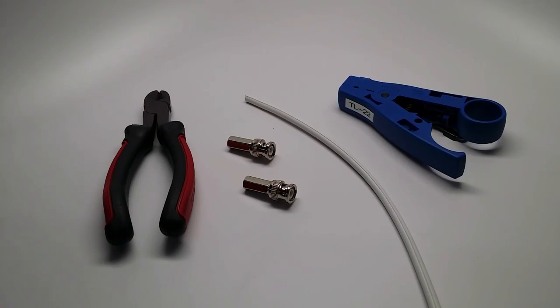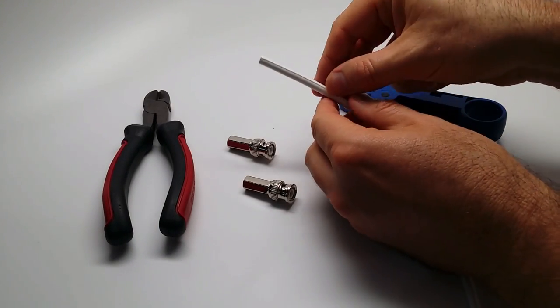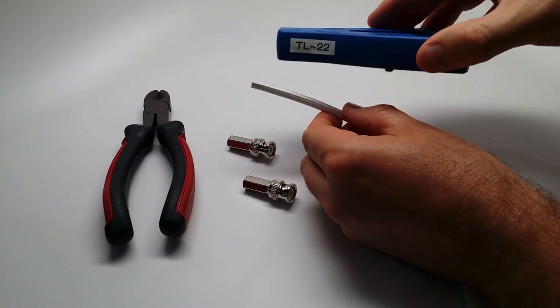Here's the piece of RG59 coax cable that I'm going to use, and I'm going to use a TL22 wire stripper.